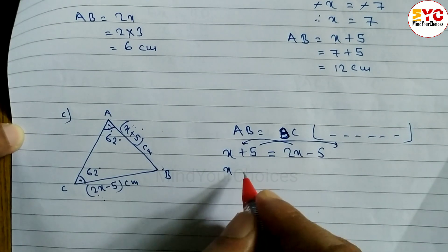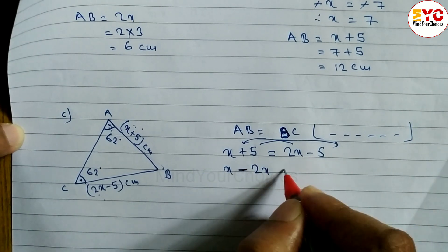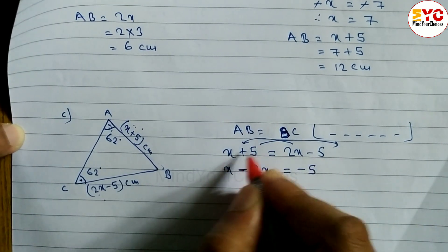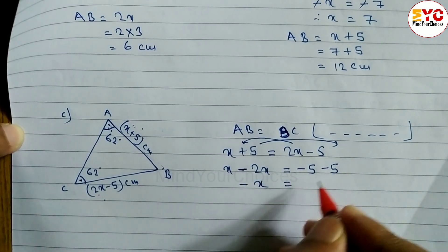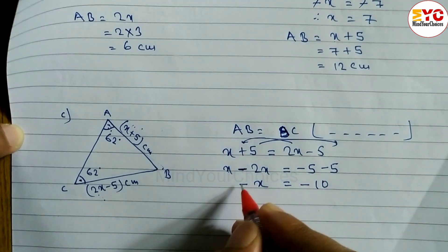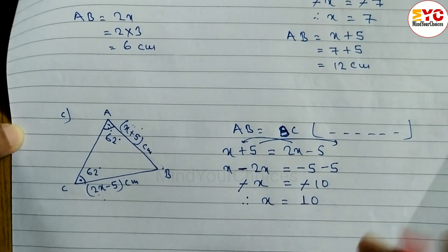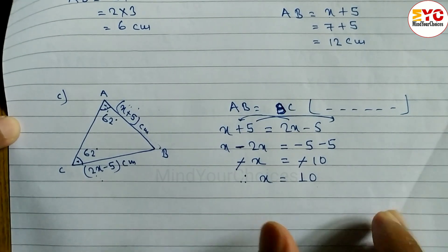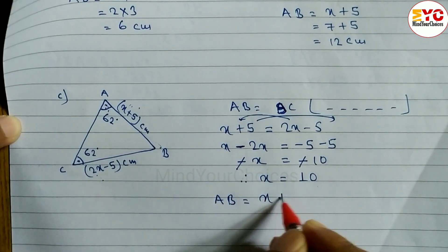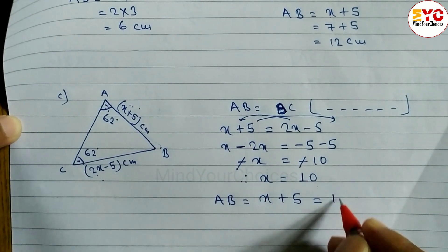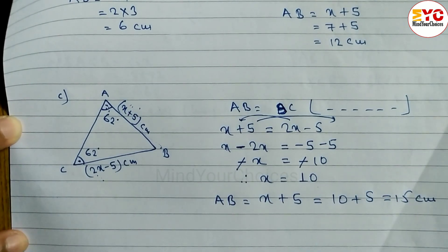Now arranging: x plus 5 equals 2x minus 5. Taking 2x to the left: x minus 2x equals minus 5 minus 5, so minus x equals minus 10. Canceling the negatives, x equals 10. We need to find AB, which equals x plus 5. Putting x equals 10: 10 plus 5 equals 15 centimeters. That is the answer.